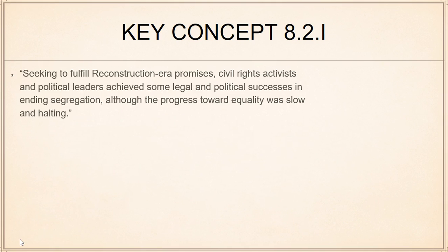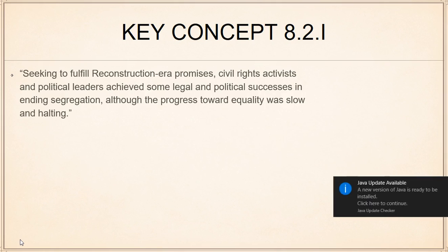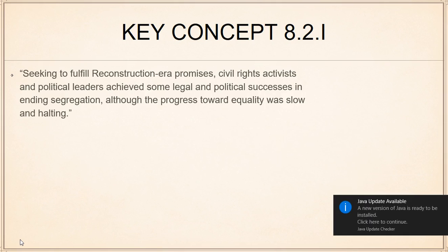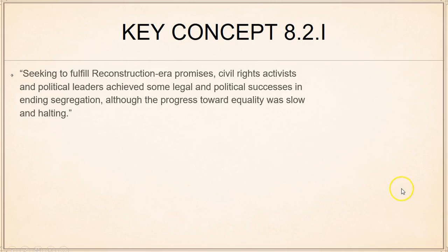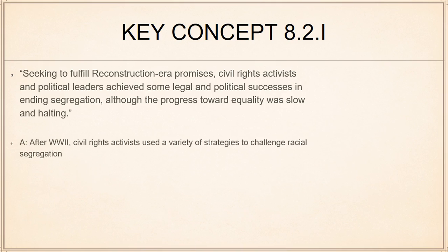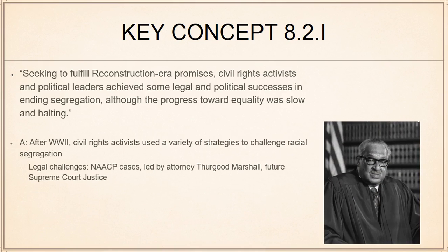Roman numeral I is focused on the African American Civil Rights Movement. We're hearkening all the way back to Reconstruction-era promises made by the federal government. In the 1950s, there's going to be a pseudo-reawakening of that movement, which was really going on in the 1860s and 1870s, coming back in full force in the 1940s, but really the 1950s and 1960s. After World War II, a variety of strategies and tactics are used to challenge racial segregation.